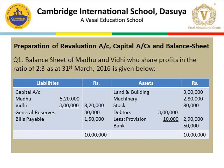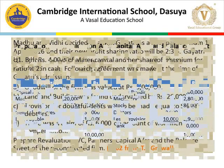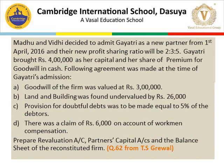Continuing the balance sheet: general reserve Rs. 30,000, bills payable Rs. 1,50,000. Assets side: land and building Rs. 3,00,000, machinery Rs. 2,80,000, stock Rs. 80,000, debtors Rs. 3,00,000 less provision Rs. 10,000 giving Rs. 2,90,000, bank Rs. 50,000. Madhu and Vidhi decided to admit Gayathri as a new partner from 1st April 2016, with a new profit sharing ratio of 2:3:5.